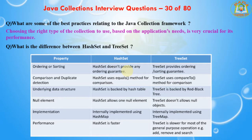The next question is: what is the difference between HashSet and TreeSet? A HashSet is implemented using a hash table, so its elements are not ordered. The add, remove, and contains methods of HashSet have constant time complexity — O(1). On the other hand, a TreeSet is implemented using a tree structure. Elements in TreeSet are sorted, and add, remove, and contains have time complexity of O(log n).